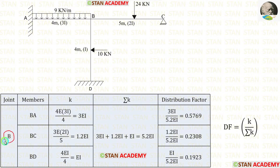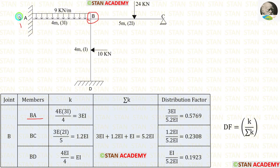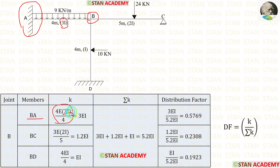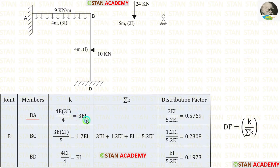At joint B we have to find three stiffness values: for BA, BC, and BD. For BA, the far end at point A is fixed, so the stiffness formula is 4EI/L. The moment of inertia is 3I and the length of BA is 4, giving a stiffness of 3EI for BA.